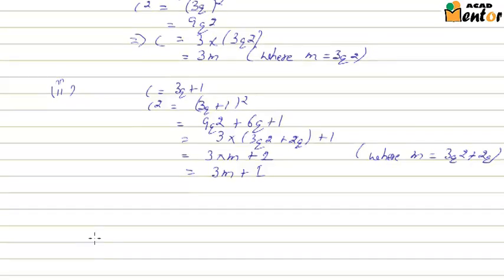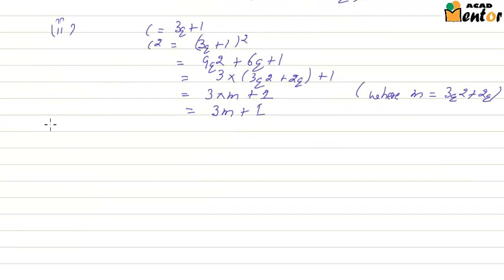Let's take the final case where r is 2. Again squaring both sides, c square is 3q plus 2 whole square.